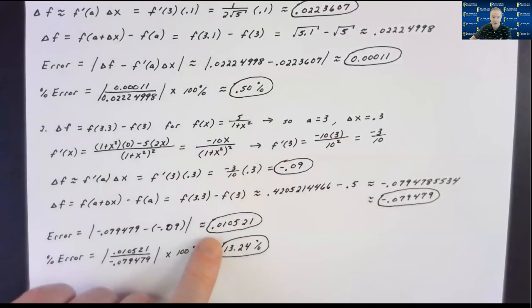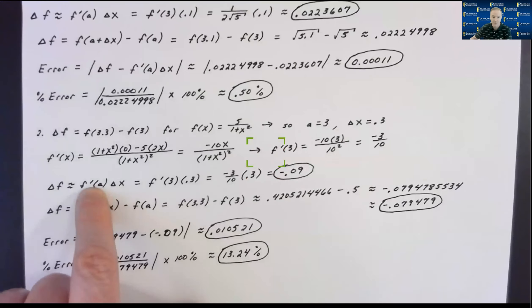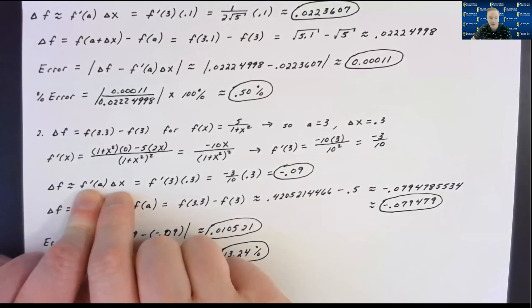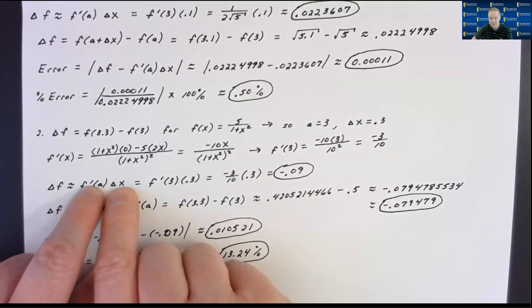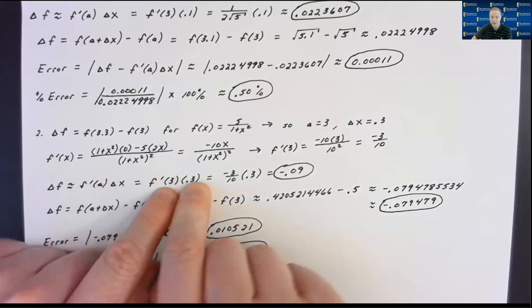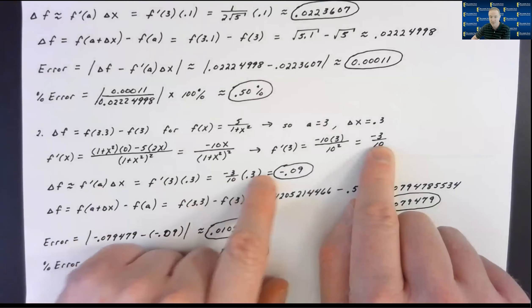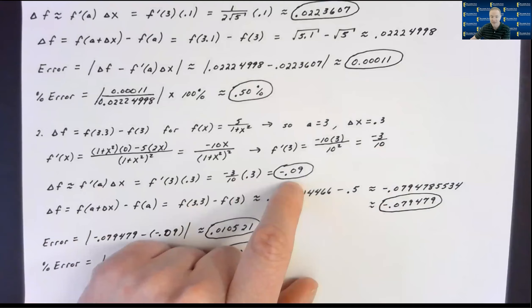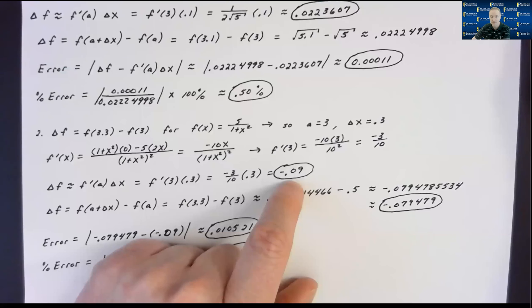The approximated value is the derivative at the point of interest times the change in x. The derivative at 3 is −3/10, and delta x is 0.3. So (−3/10) × 0.3 = −0.09. That's the approximate change in the y value as x moves from 3 to 3.3.